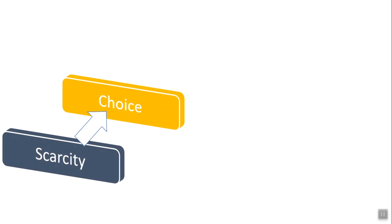In that one hour, you sacrifice one thing. Let's say for half an hour you study and for the remaining half an hour you play. It's not possible to study and play a game at the same time in that one hour. You have to make choices — choice means comparing alternatives. If it's exam time, you prioritize and skip playing games to concentrate on studies.